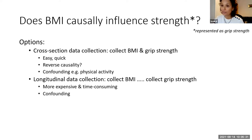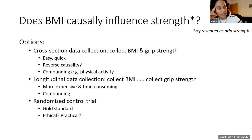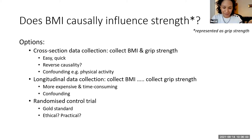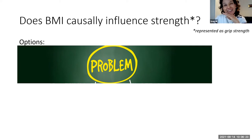A third option would be a randomized control trial — the gold standard. I'd take a third of you and reduce your BMI, another third and increase your BMI, and keep the last third at a constant BMI, then measure grip strength a month later. But that's not ethical or practical. What ethics committee is going to approve that kind of study design? So I now have a real problem: I've gone through three different study designs and none of them are ideal or practical.